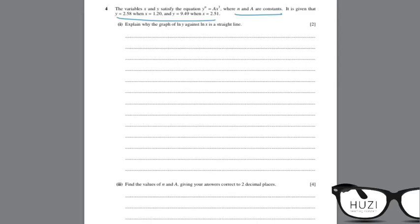Explain why the graph of ln y against ln x is a straight line. So, the initial function is y to power n equals ax cube. So, the graph is of ln y against ln x.